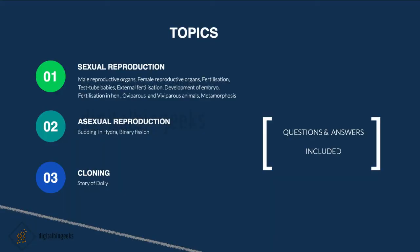Hello students, welcome back. In this video we will discuss about reproduction in animals. We know that digestion and respiration are essential for the survival of an organism. Like that, reproduction is very important in the continuation of a species — that is, the same kind of organism. If plants and animals won't reproduce, that will be the end of that species. Reproduction is the process through which living beings produce new young ones of their kind.